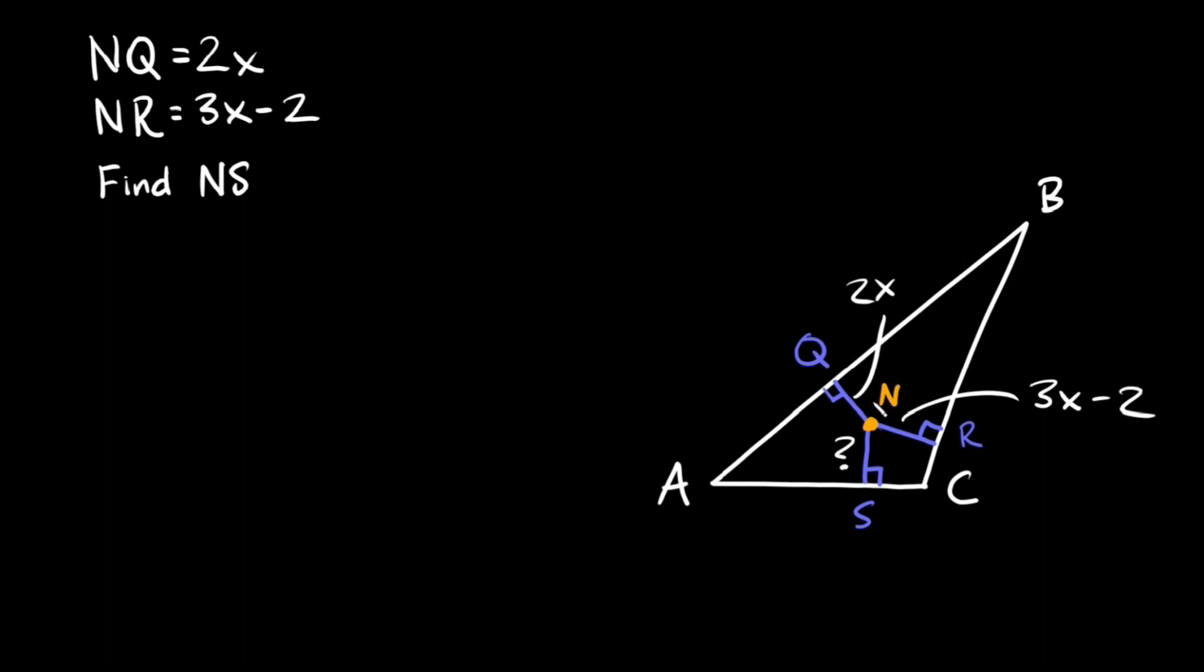Okay so the first thing we need to take into account is that all these distances are the exact same length. So this distance, this distance, and this distance they're all the same length. So here we can say that NQ is equal to NR and that's equal to NS. The lengths.